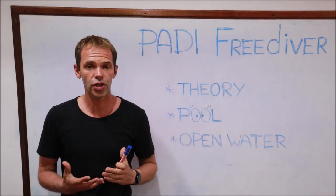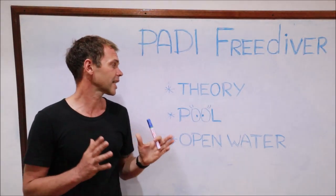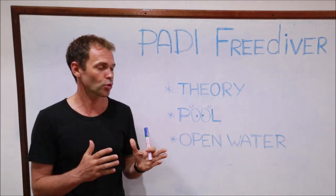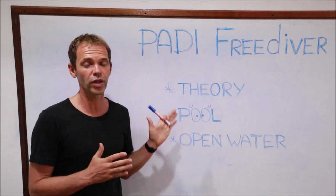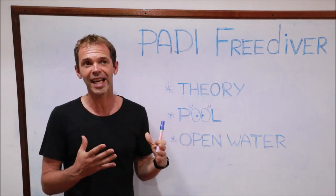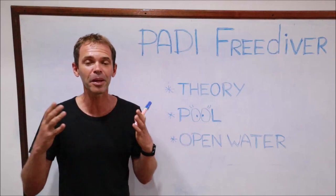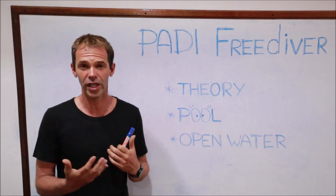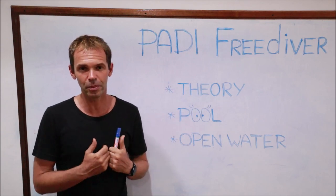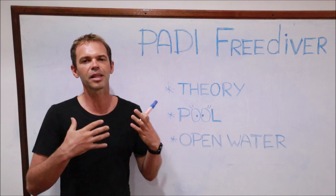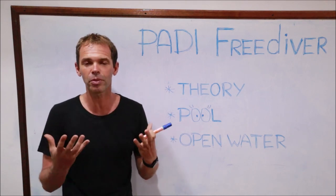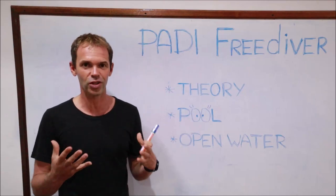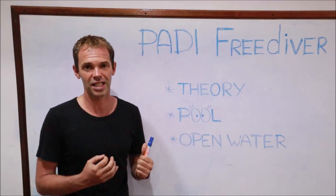The next part is the pool session, which is a really important step. When choosing a freediving school, make sure it includes a pool session. The pool session covers really important skills such as static apnea, dynamic apnea, safety skills, and rescue skills. Static apnea is the best and easiest way to learn breath-hold — you just hold your breath and try to relax.